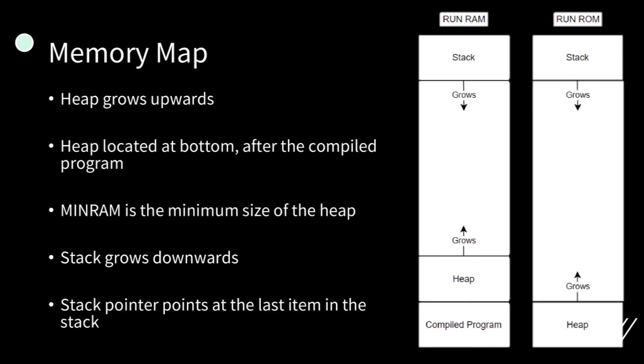Now for the memory map. The heap is located at the bottom of the RAM. On run ROM, this is location zero. However, for run RAM, this is located in the first space available after the compiled program. The heap then grows upwards, and the MinRAM header specifies the minimum size of this heap. The stack is located at the top of the RAM and grows downwards. The stack pointer points to the last item in the stack.